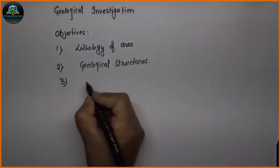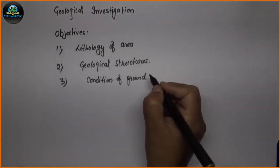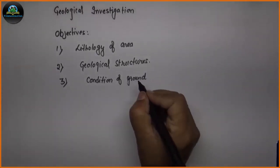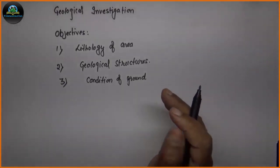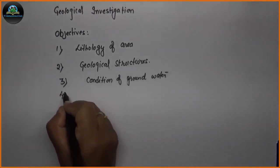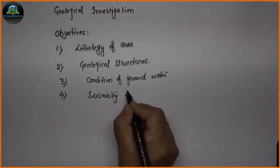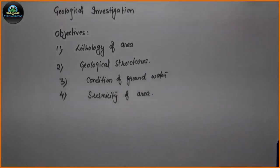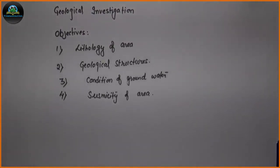Third is the condition of groundwater — what type of groundwater table is present, whether it is above or below the ground. The fourth and very significant objective is the seismicity of the area: what are the earthquake conditions there, whether the area experiences any large seismic events in the near future, and what the magnitude of that seismicity would be.